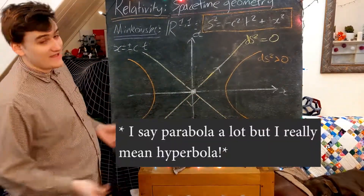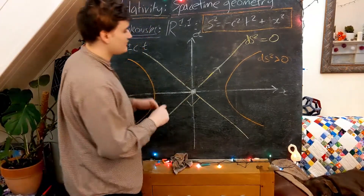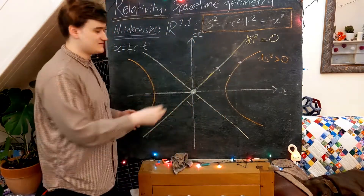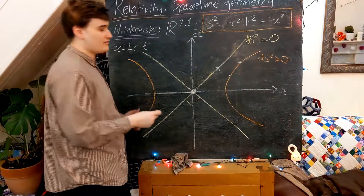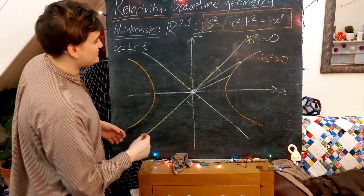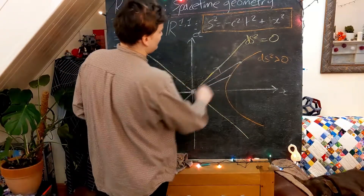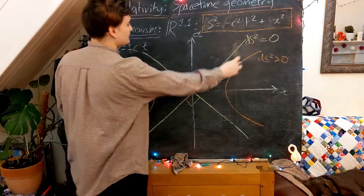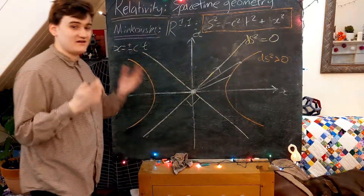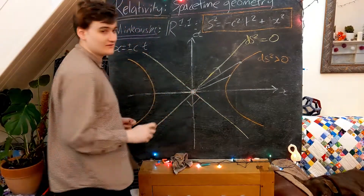We need to abandon our Euclidean notion of distance and realise that two points that lie on this orange line are all the same Minkowski separation from the origin - even though our Euclidean intuition wants to assign different distances to them. In Minkowski space, all the points on this orange line are the same spacetime distance away from the origin.